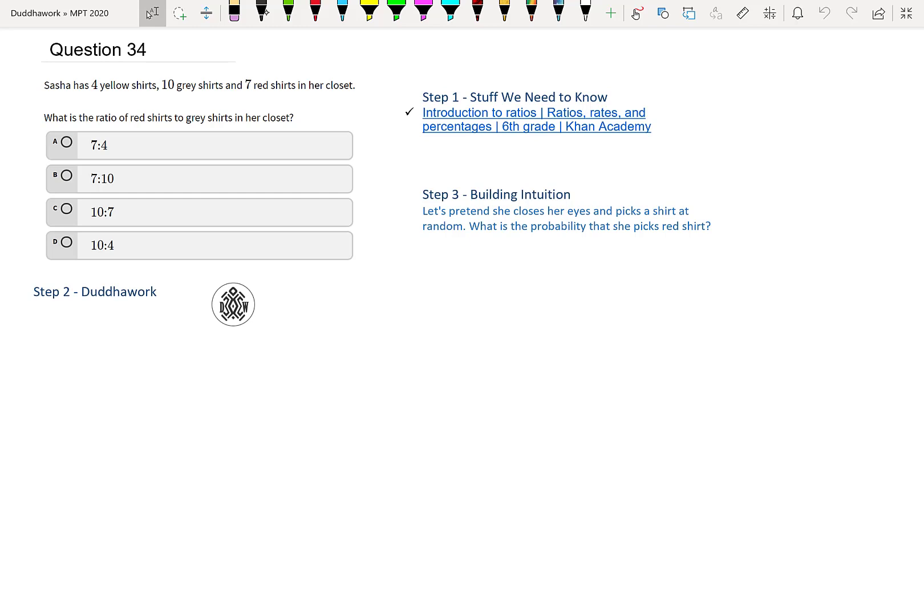We have that Sasha has four yellow shirts, 10 gray shirts, seven red shirts in her closet. What is the ratio of red shirts to gray shirts in her closet? So if you know what you need to do here, go ahead and pause the video, try this problem and correct yourself with the end of the video.